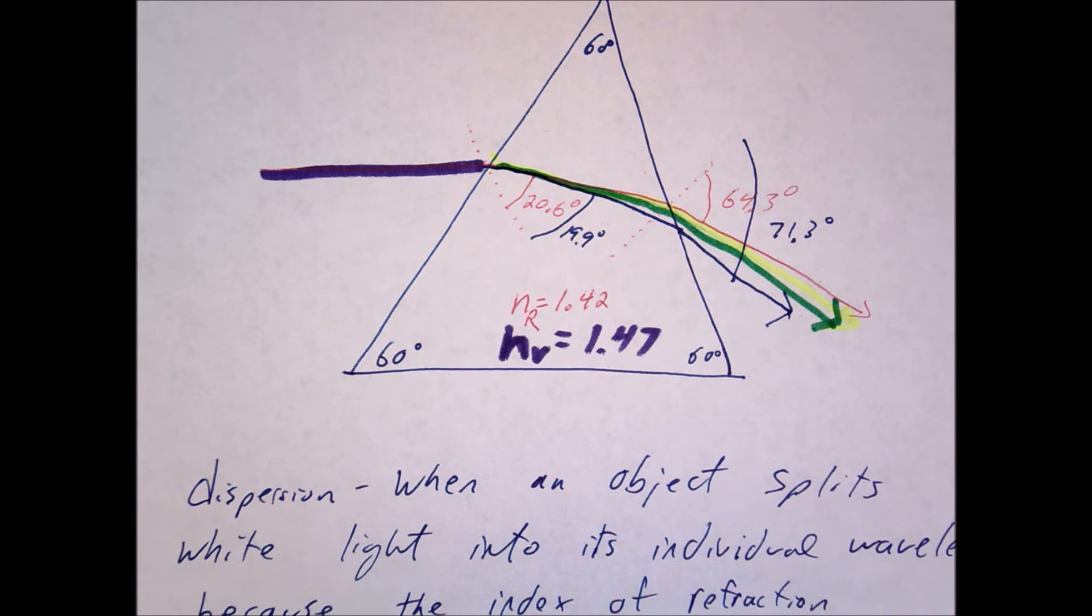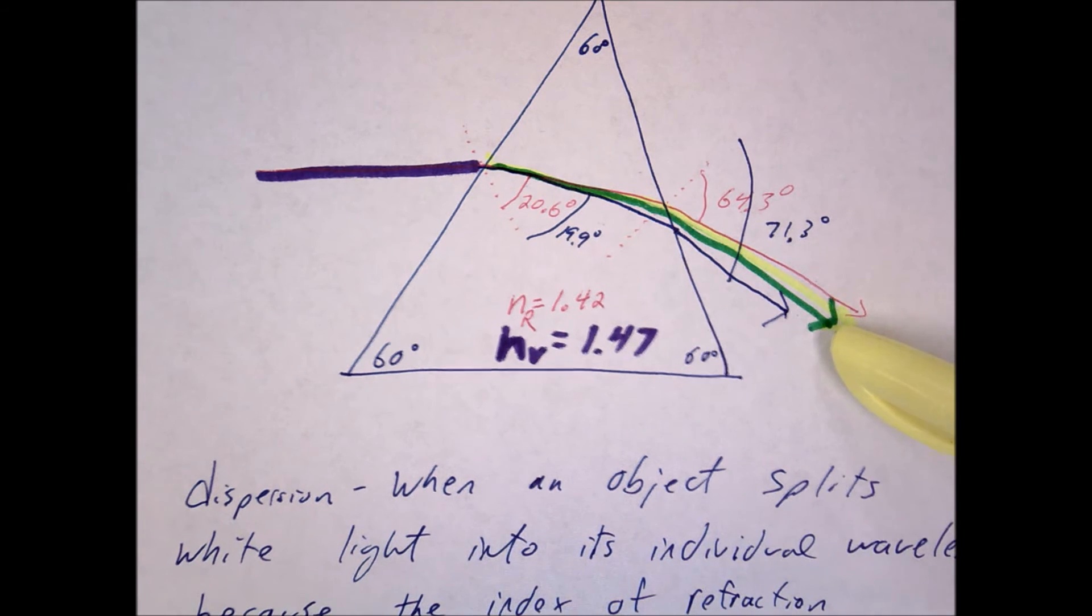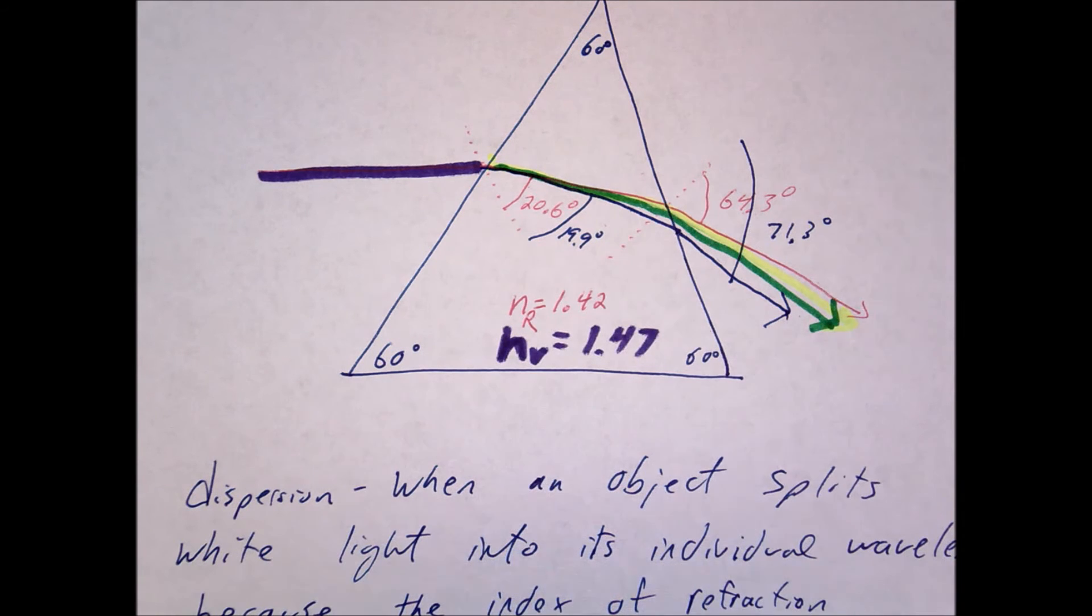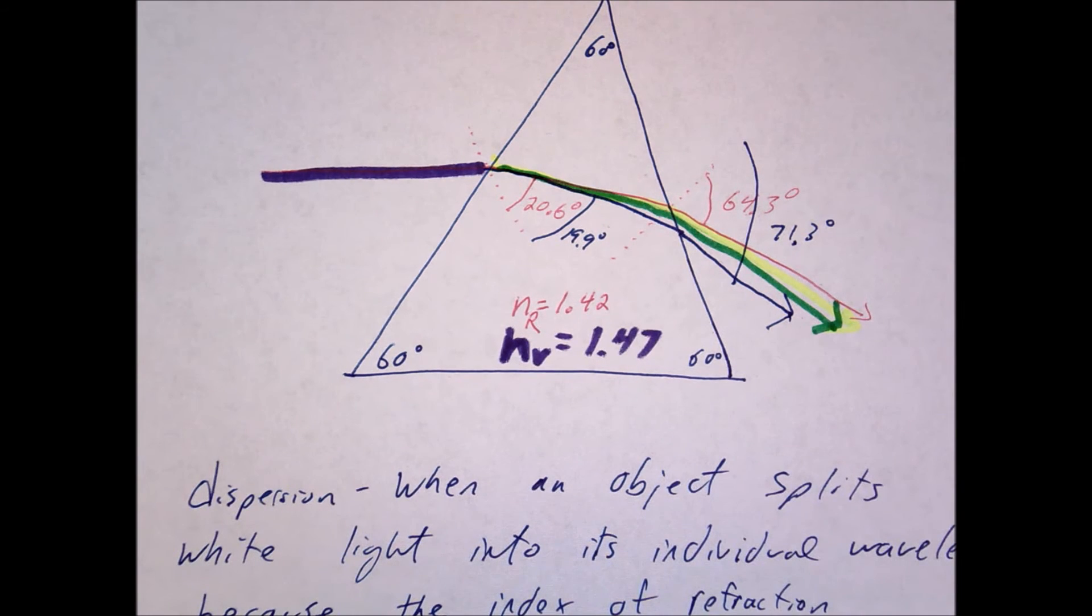Yeah, the one for water, whatever that table said. It was usually yellow is what they use. 589 is what they used in that table. That's kind of the standard. So that was for the yellow color. So it's going to be slightly different for each. Yeah, they kind of do it like right there close to the middle.